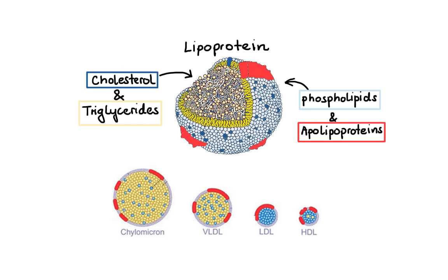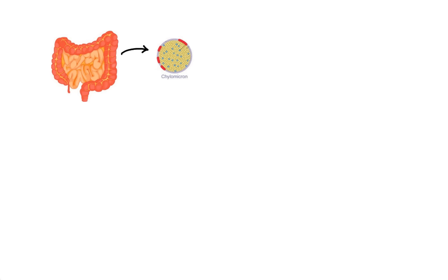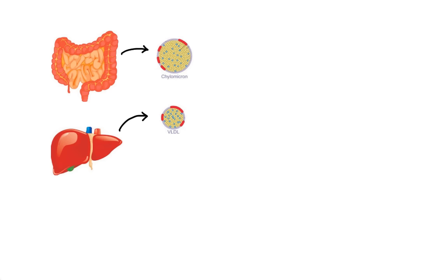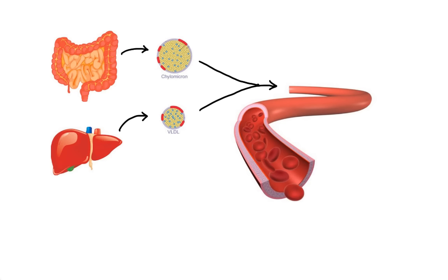Chylomicrons are produced in the gut from dietary lipids and are composed mostly of triglycerides and a relatively small amount of cholesterol. VLDLs are produced in the liver and are composed primarily of triglycerides and some cholesterol in an amount relatively larger in comparison to chylomicrons. The function of these two lipoproteins is to deliver energy-rich triglycerides to cells throughout the body. Once secreted into the bloodstream, the enzyme located on the capillary walls called lipoprotein lipase releases the fatty acids, which are then taken up by the tissues.